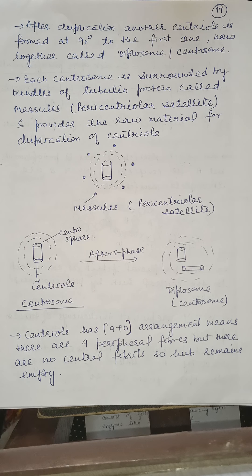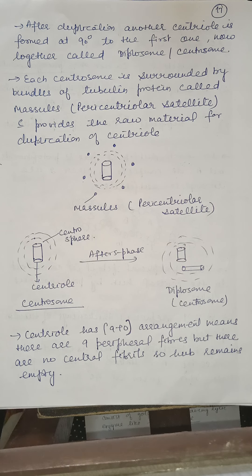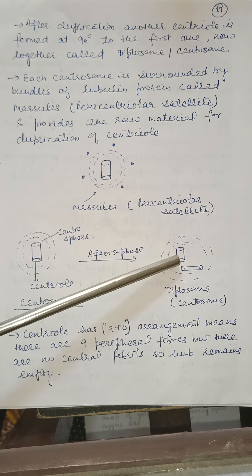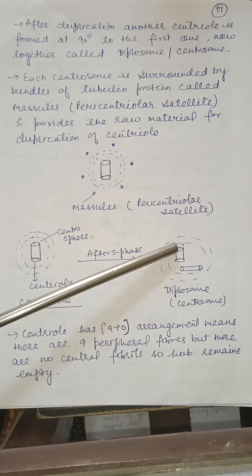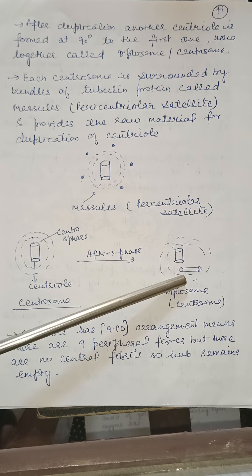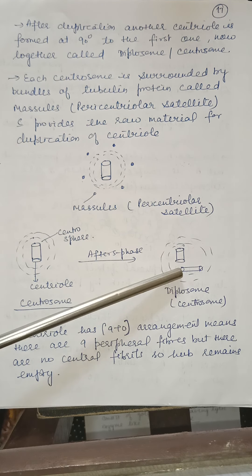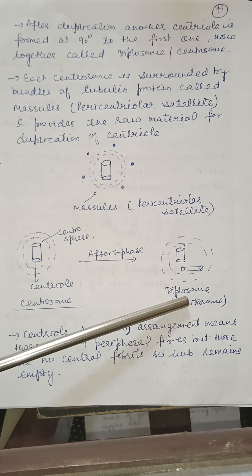After duplication, the new centriole is formed at 90 degrees to the first one. These two centrioles, which are present at 90 degrees to each other, are known as a diplosome.